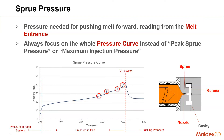So where is the sprue? Please look at the picture on the right side. The orange part is the screw and the barrel. After the barrel we have the nozzle and sprue, then the runner, and between the runner and cavity we have the gate. So sprue pressure means the pressure value read around the sprue.